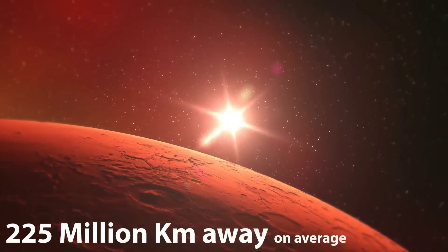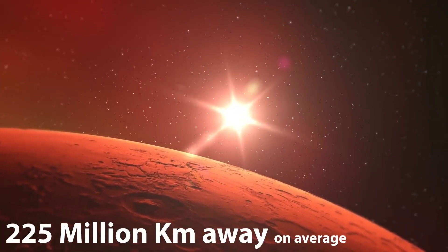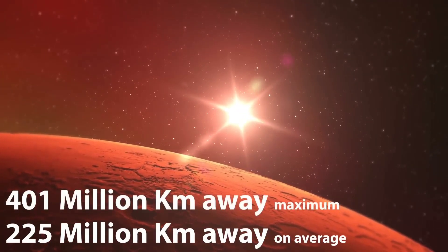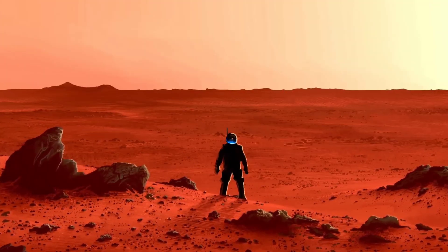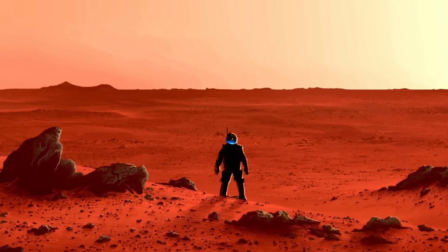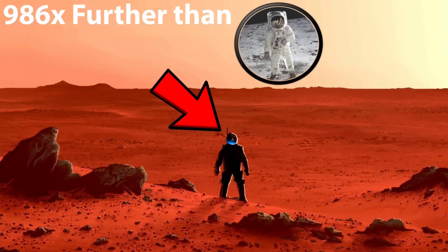This is a photo that was taken on Mars. In that tiny dot that you see there is Earth, as seen from the Martian surface. On average, Mars is an incredible 225 million kilometers away from Earth, but that distance can be as high as 401 million kilometers.